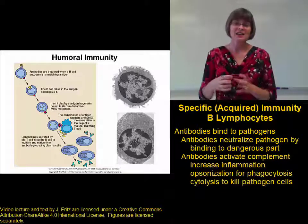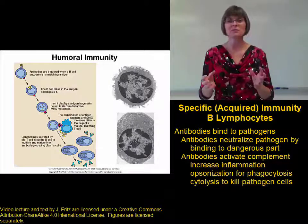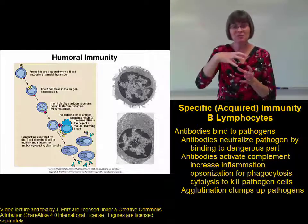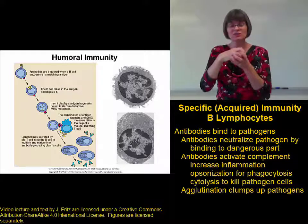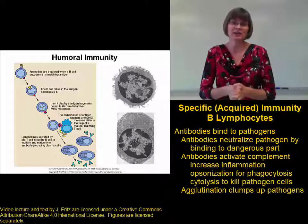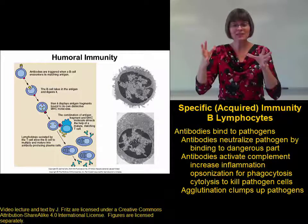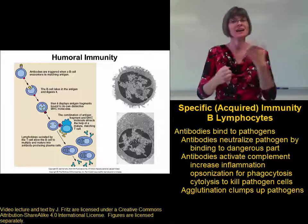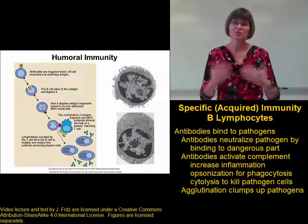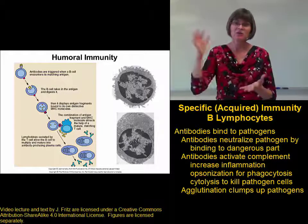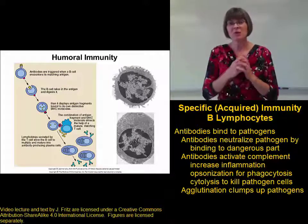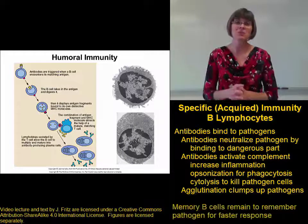A third way antibodies can neutralize pathogens is by agglutination. We saw agglutination before when we were looking at blood typing — if you added antibodies that could bind to the antigens on the blood, it caused the blood to clump up. When things clump up like that, they can't function very well anymore. When pathogens are clumped up or agglutinated by antibodies, the pathogens can't function anymore either. Once the pathogen has been destroyed, we reduce the number of B cells, so most of the B cells die when the pathogen is gone.